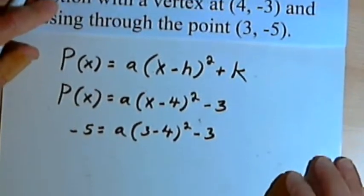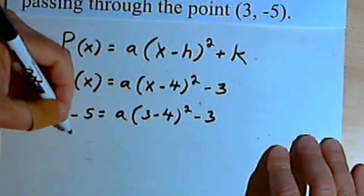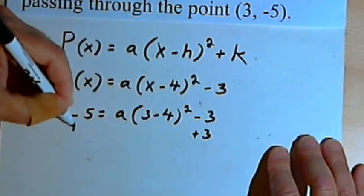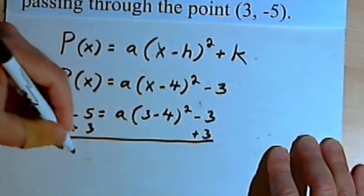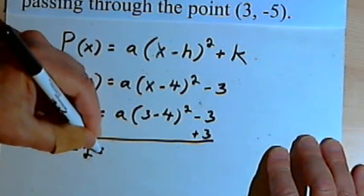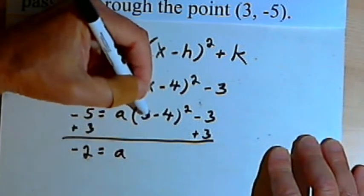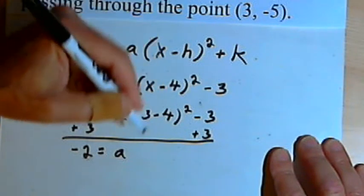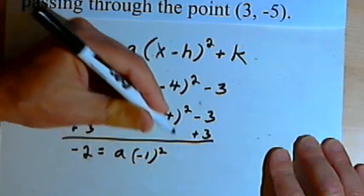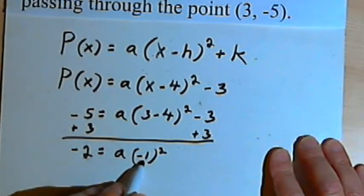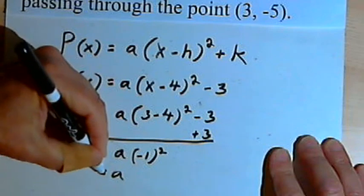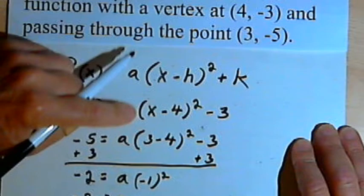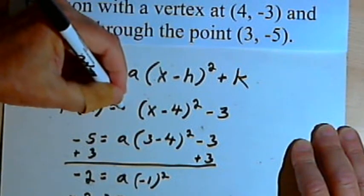Now let's see how we can solve this. Let's add 3 to both sides. So now I've got negative 2 equals a times — well, negative 1 squared is just 1, so that means that a is going to equal negative 2. So I can go back here and instead of an a, I'll put in negative 2.